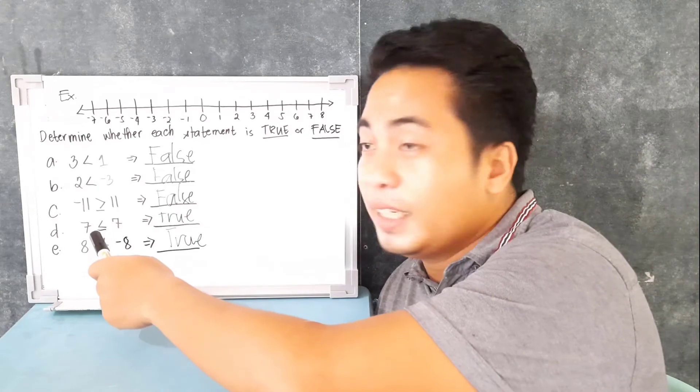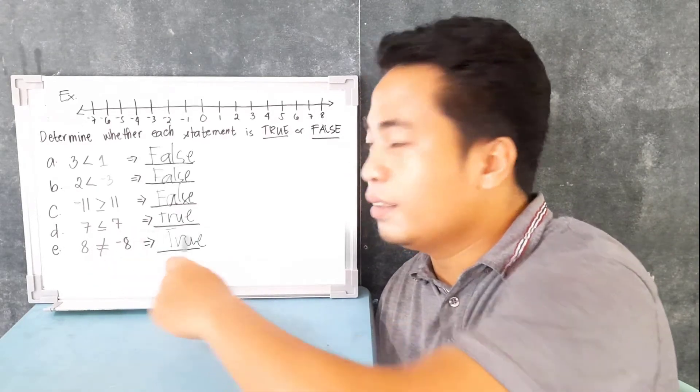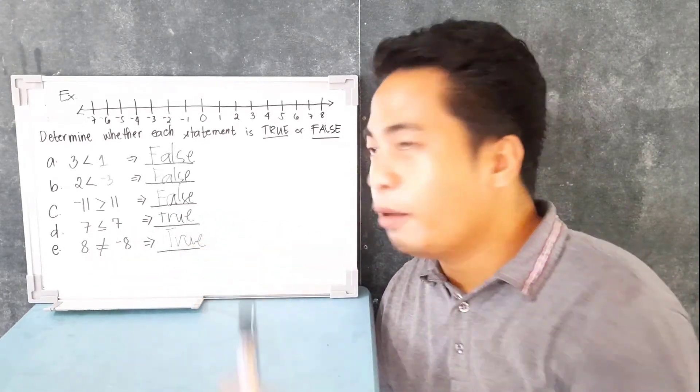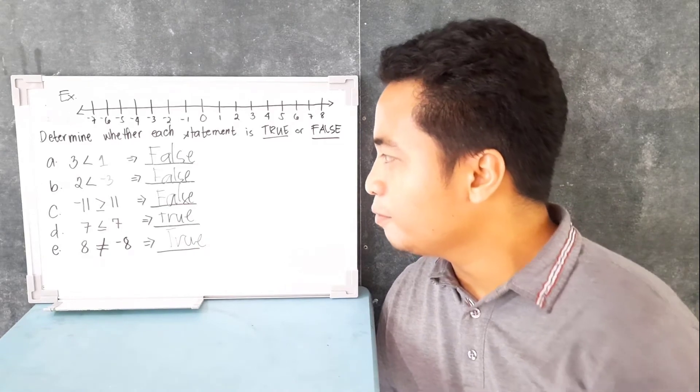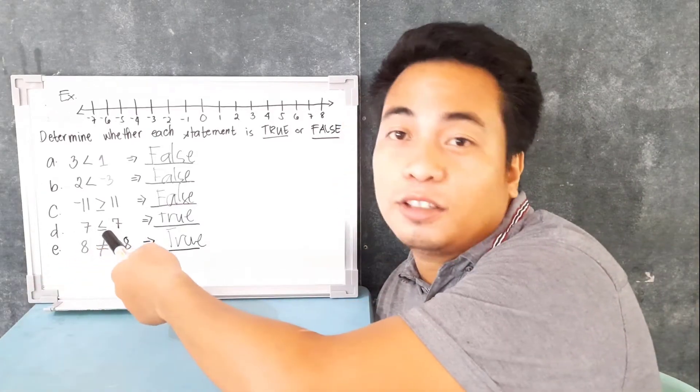What about 7 is less than or equal to 7? It is true. Why? Because 7 is equal to 7.